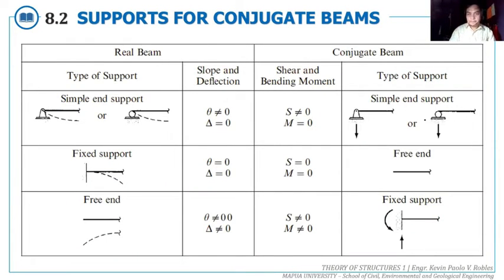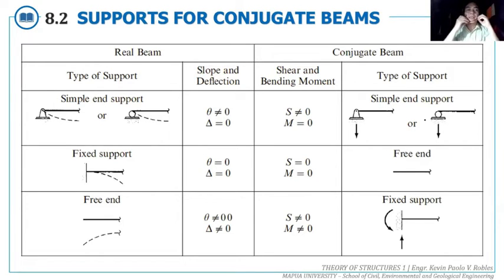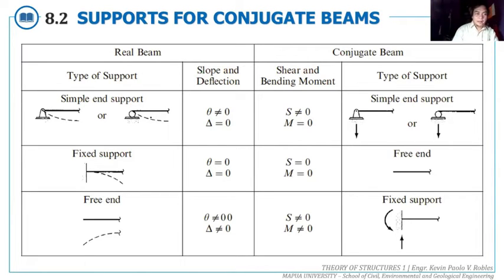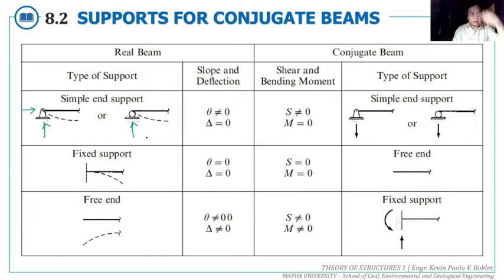Here is the comparison or conversion of the real beam to its conjugate beam, depending on the joints or supports. For a hinge support or roller support, there is a reaction. At a hinge there are two reactions (horizontal and vertical); at a roller there is one. Whenever we have a simple end support — hinge or roller — the slope there is not equal to zero. If we draw the elastic curve, the tangent line at that point creates an angle or slope with respect to the horizontal, so theta is not equal to zero.